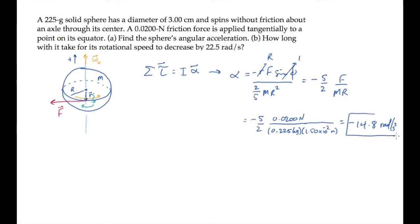Now in part b, we're asked to find how long it takes the sphere to slow down its rotation by 22.5 radians per second. The angular acceleration alpha is constant, so we can solve this using rotational kinematics. We're told that the sphere slows its spin by 22.5 radians per second. So that's this quantity, the change in omega.